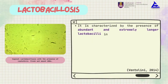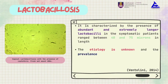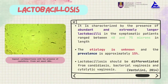Lastly, based on our reading, Ventolini states that Leptothrix may be present in Lactobacillosis infection. They do not conclude that Lactobacillosis is caused by other Lactobacilli organisms, but rather by the presence of abundant and extremely long Lactobacilli ranging between 40 and 75 microns in length. Unfortunately, the etiology of this organism is still unknown. Ventolini concludes that Lactobacillosis should be differentiated from candidiasis, bacterial vaginosis, and cytolytic vaginosis.